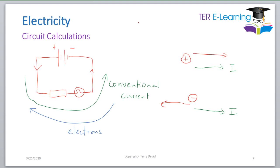Current is measured in amperes — that's the SI unit. From Q = I × T, we can say one coulomb equals one amp multiplied by one second, so an equivalent unit for the coulomb is one ampere-second. You may see this in the multiple choice exam.